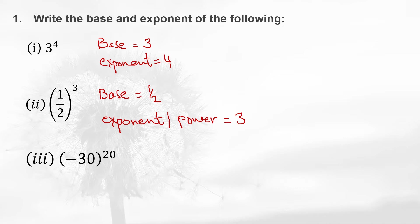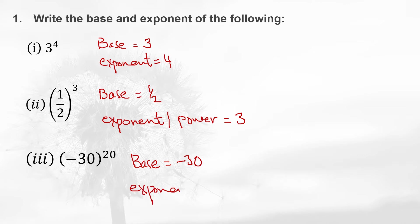Now look at this one: minus 30 to the power 20. The exponent here is 20, and the number which is minus 30 — that is the base. So the base in this case is minus 30 and the exponent is 20.